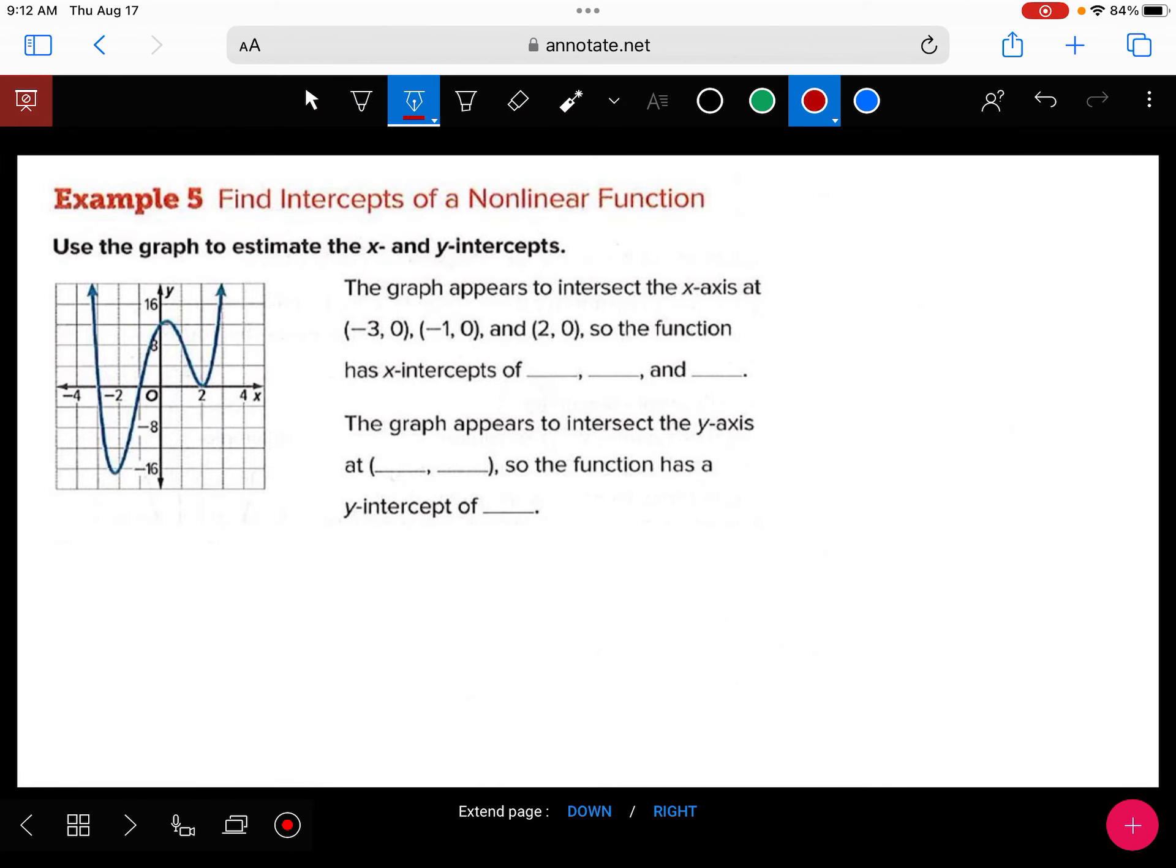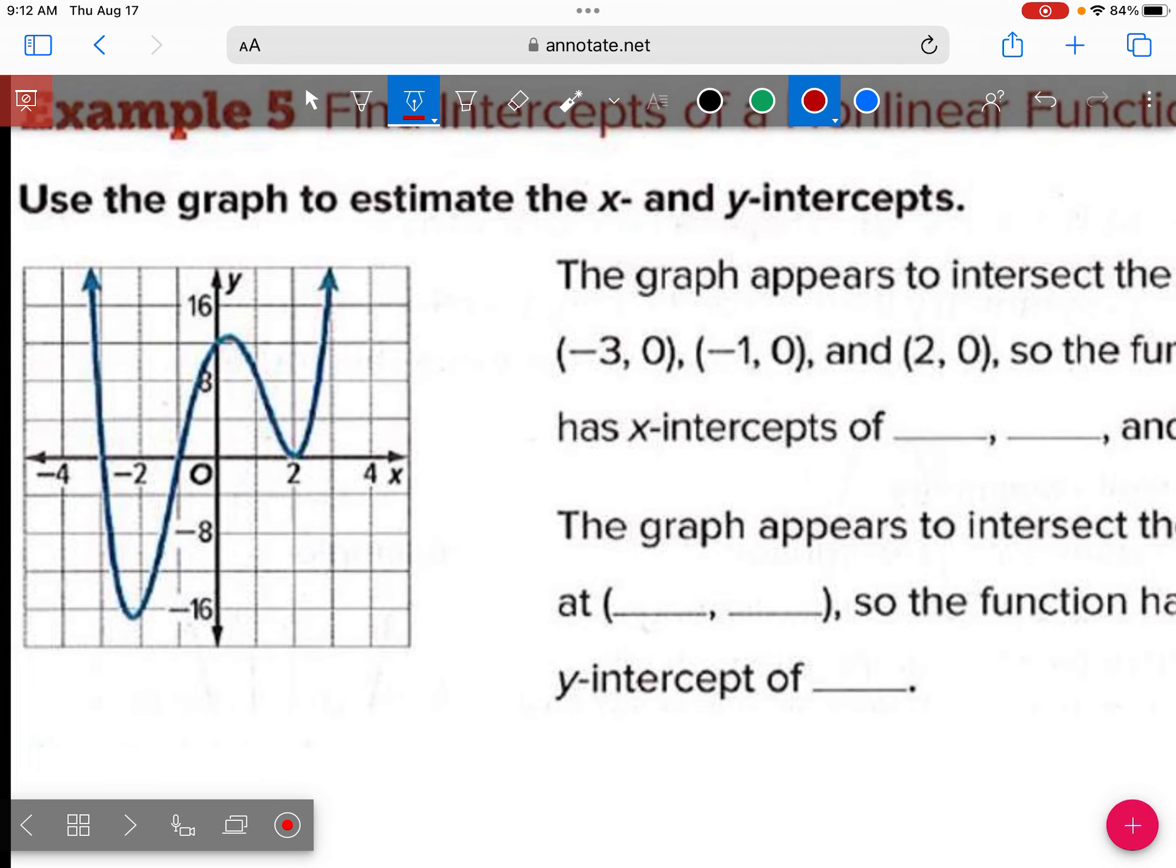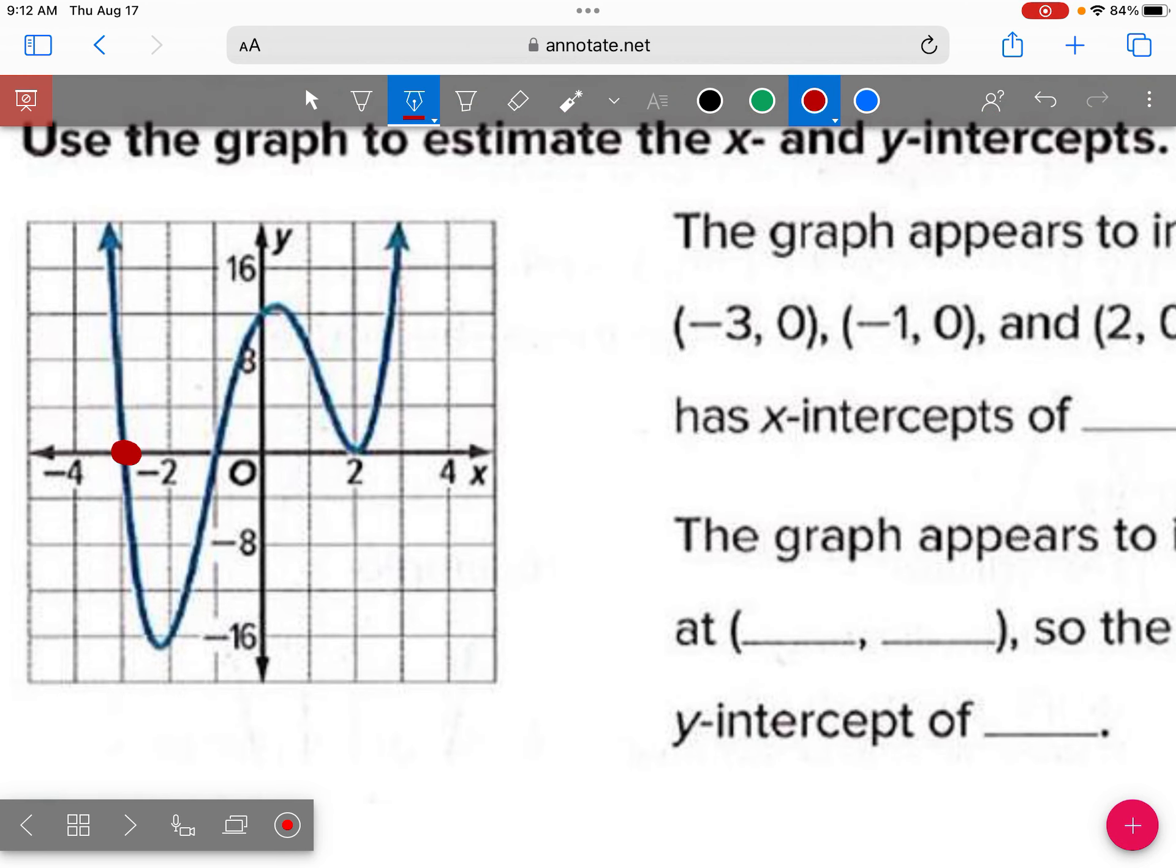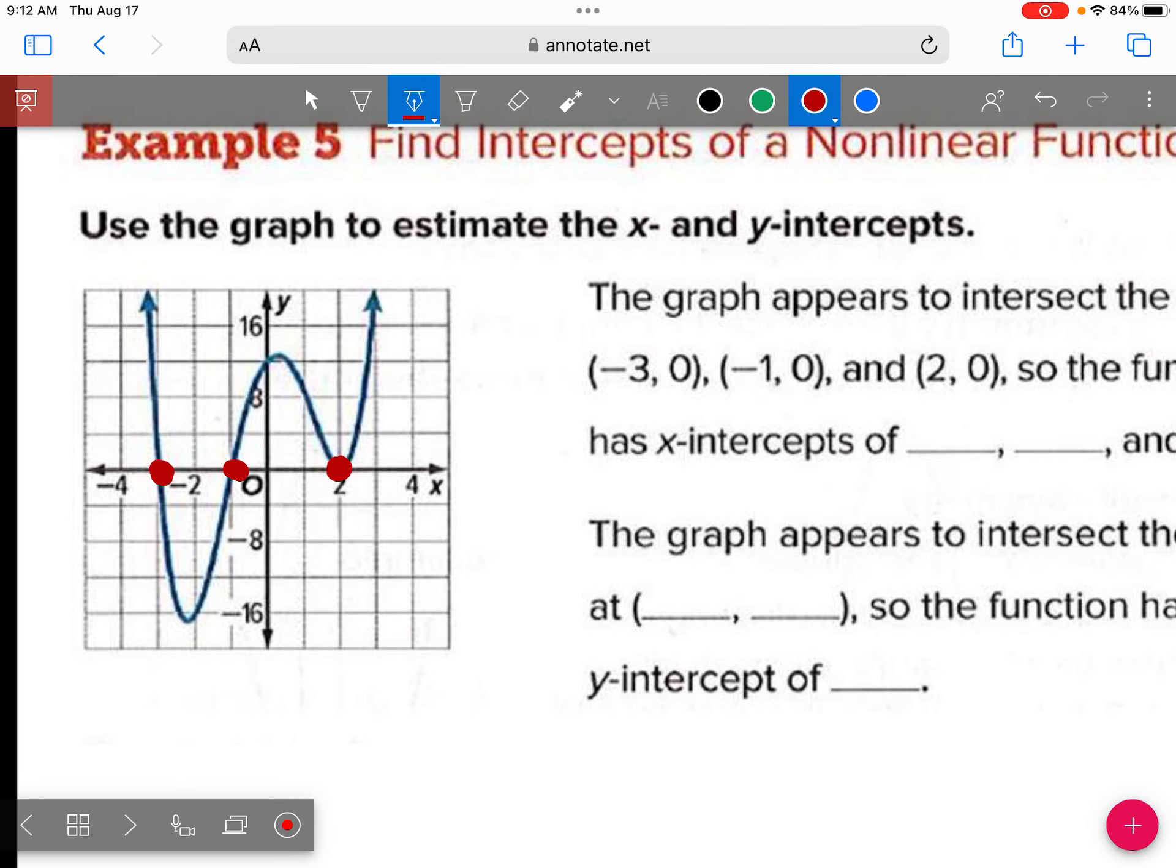So let's look at this graph. So the x-intercept, this graph crosses through the x-axis here, here, and here. There's three places where it crosses through the x-axis. So that means it has three x-intercepts. The first x-intercept is at negative three, zero, negative one, zero, and two, zero. So your x-intercepts are negative three, negative one, and positive two.